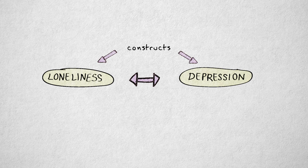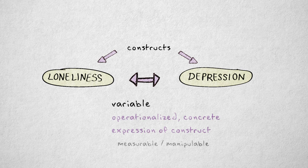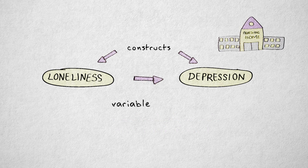Of course, loneliness and depression can be expressed in many different ways. The term variable refers to an operationalized version of a construct. A variable is a specific, concrete expression of the construct, and is measurable or manipulable. For example, I could operationalize loneliness in a group of elderly people in a nursing home by using a self-report questionnaire.